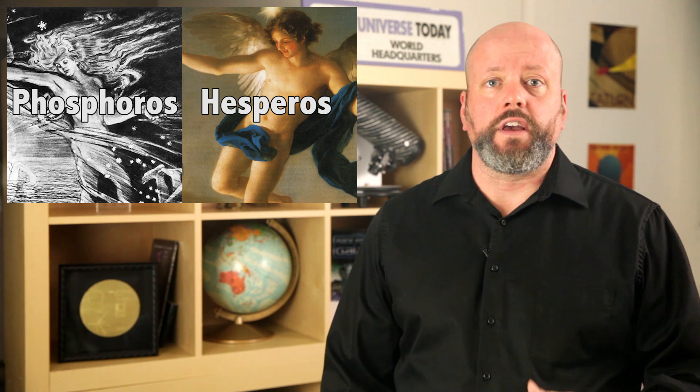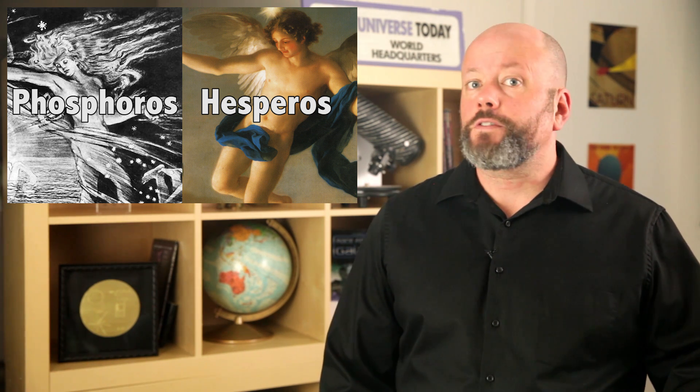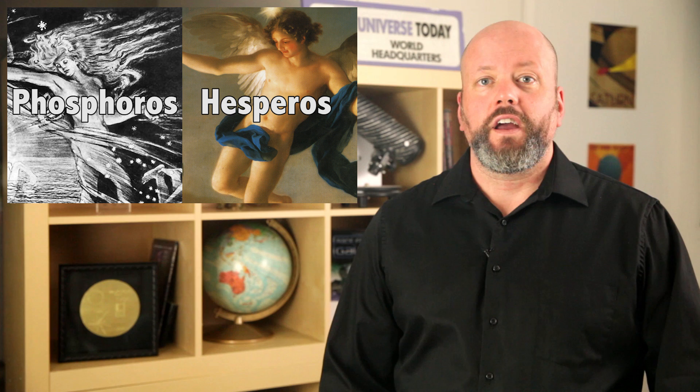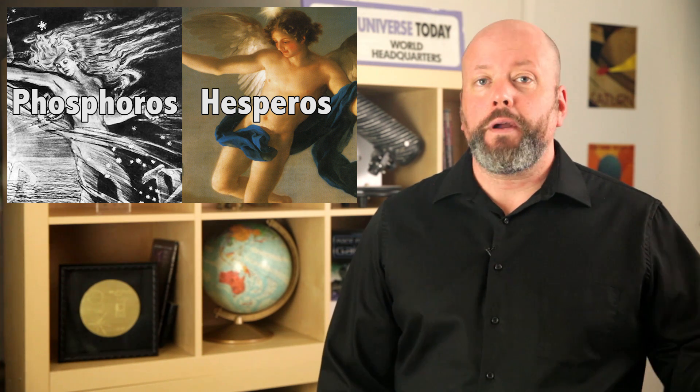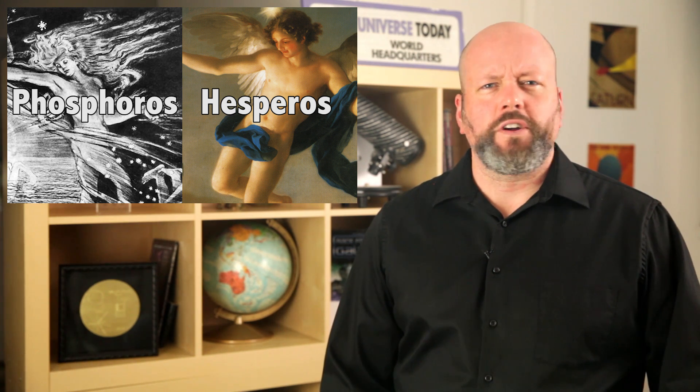Some civilizations figured out that it's a single object, while others believed that they were looking at two separate entities. The ancient Greeks, for example, called the morning edition of Venus Phosphoros, the bringer of light. And they called the evening star Hesperos, the star of the evening.